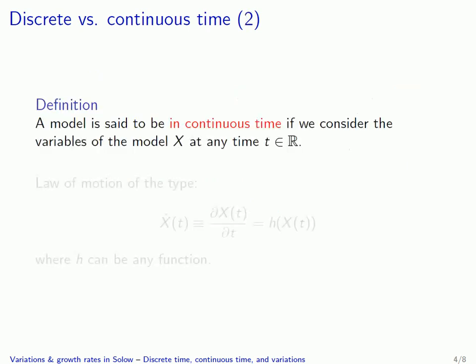Things will be a bit different if we consider a continuous time model. In the case of a continuous time model, we try to keep track of the variables of the model x at any time t, where t is any real number. So we don't stop at 0, 1, 2, and so on, but we take any values for time, so we can keep track of what is happening in the model all the time. Time doesn't tick here — time rather flows in this kind of model.